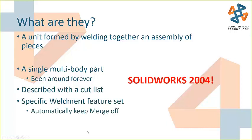There's a specific weldment feature set. The cool thing about these specific weldment tools is if you have a weldment feature in your model, it will automatically keep the merge body functionality off. So even if you're not creating a traditional weldment — if you just want an easy way to always work in a multi-body part environment — just add the weldment feature, merges turn off automatically, and you can do whatever you want.